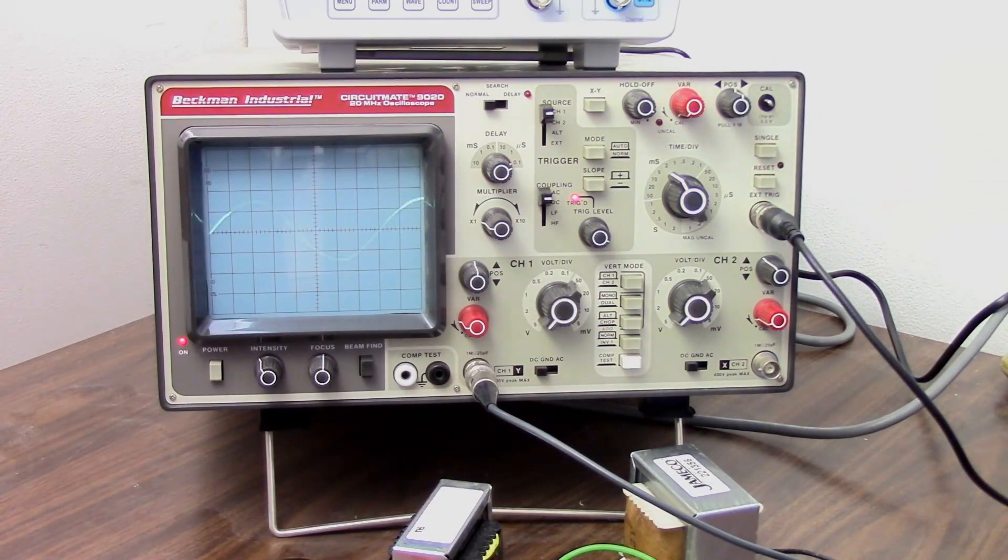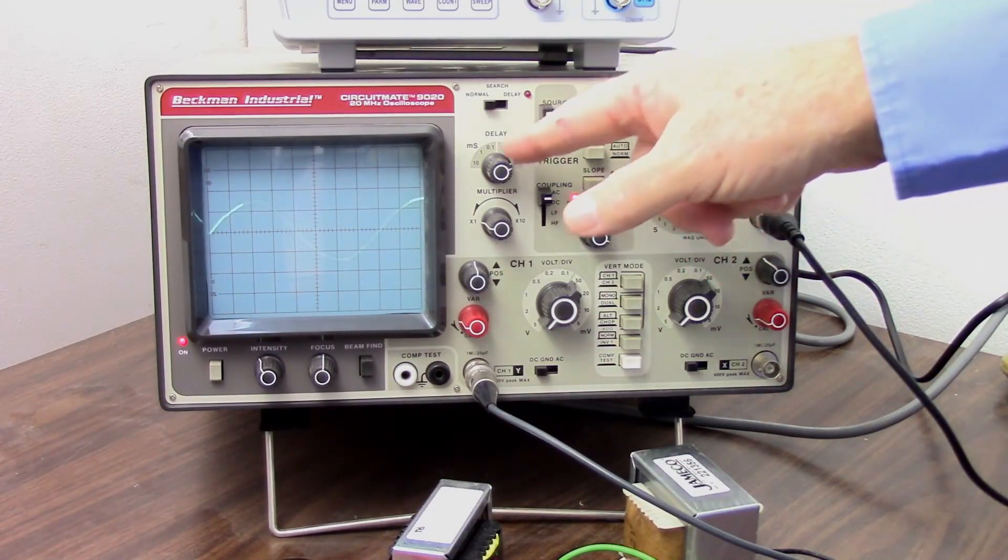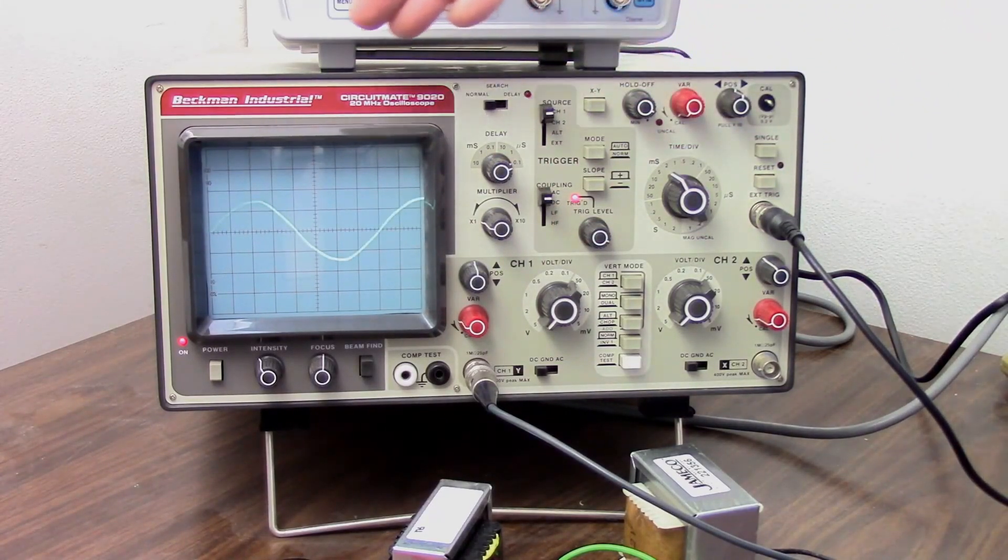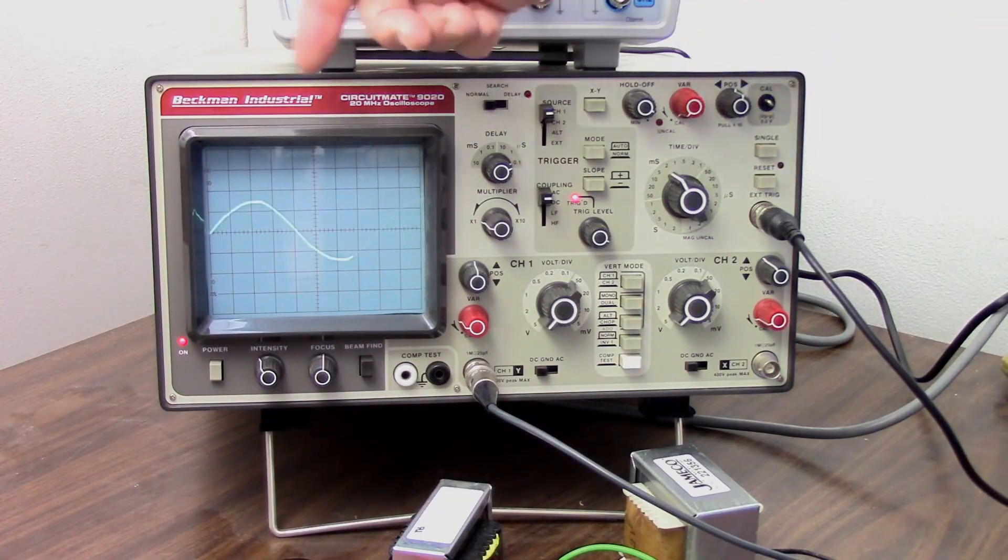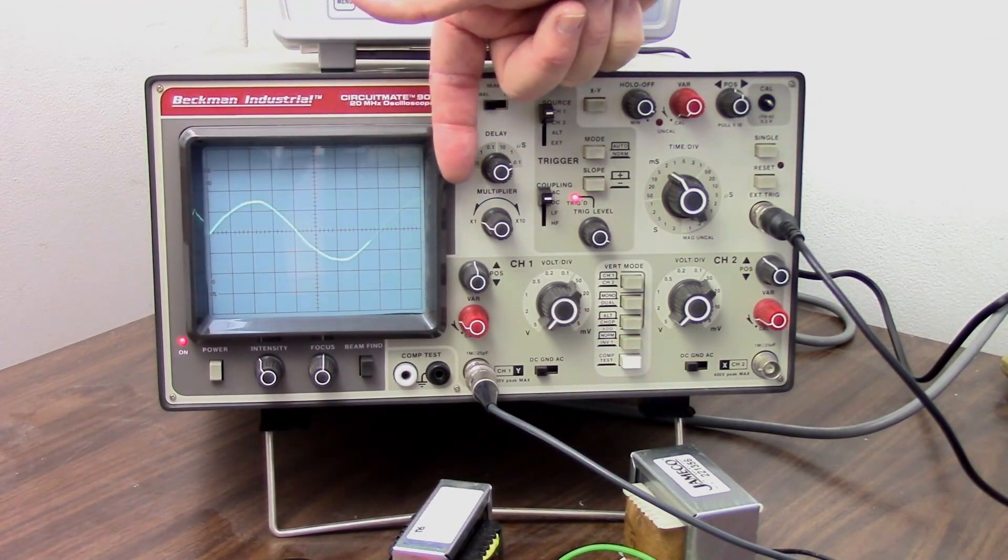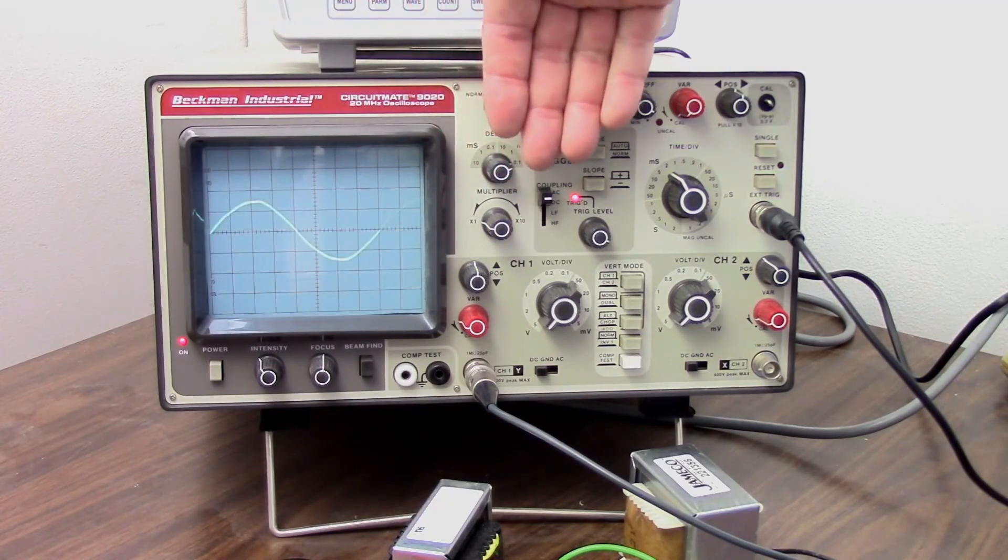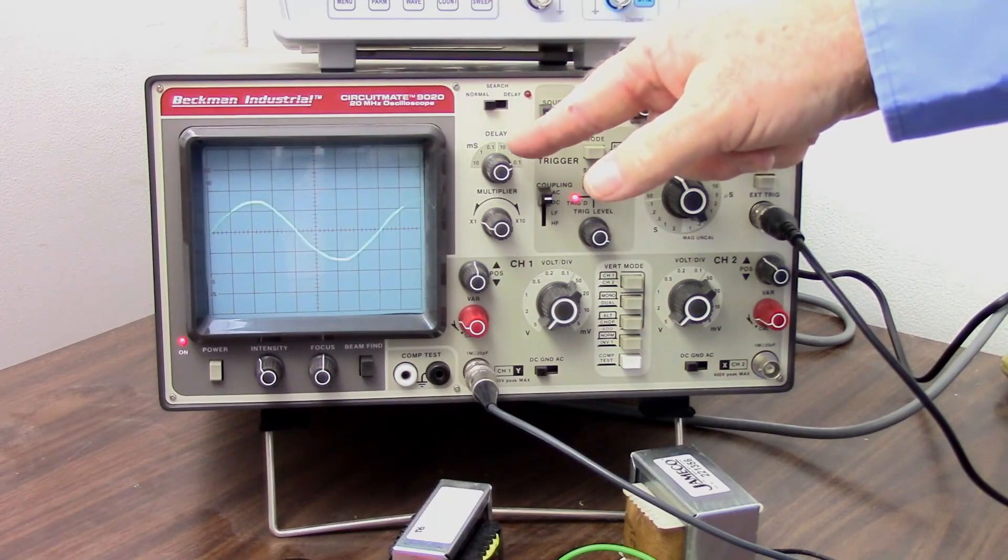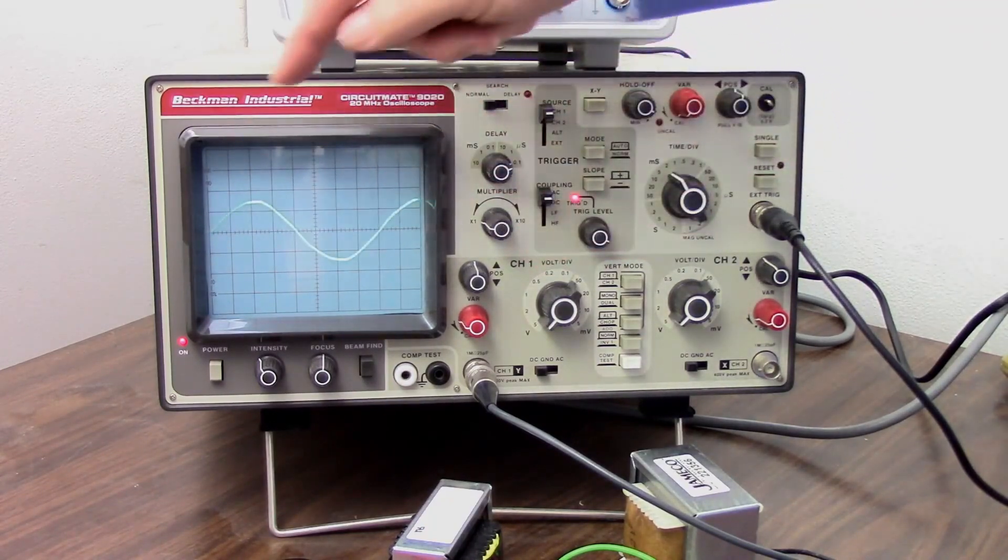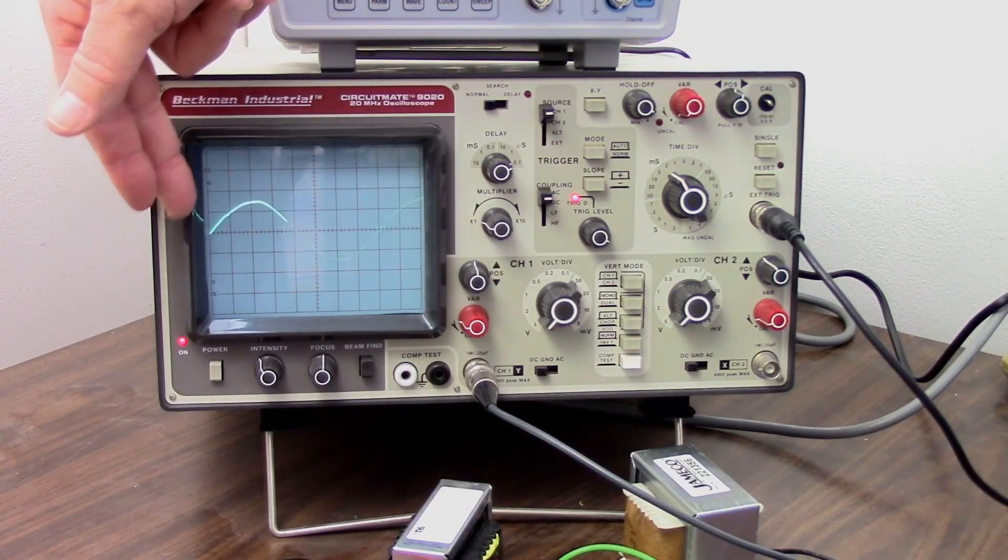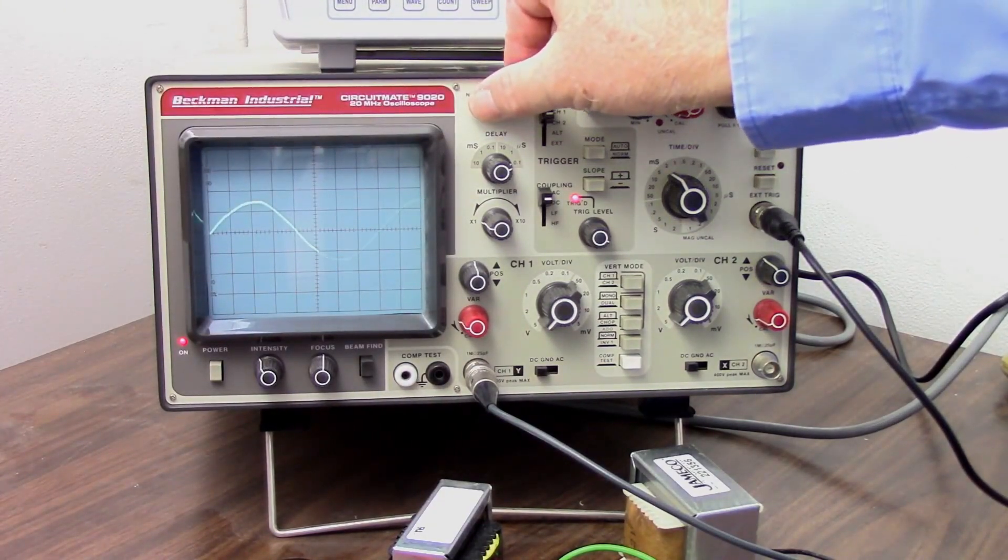Another thing to look at while we have the oscilloscope set up is the sweep delay. Some oscilloscopes have this and some don't. Many of them do. What this does is, as time goes by, our spot goes across the screen. What if something happens so late that, if you can imagine our spot going beyond the screen, it happens over here where we can't see it? Well, the sweep delay allows us to delay the triggering such that this starts late.